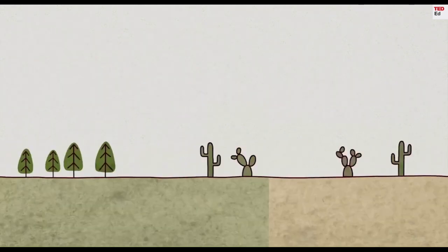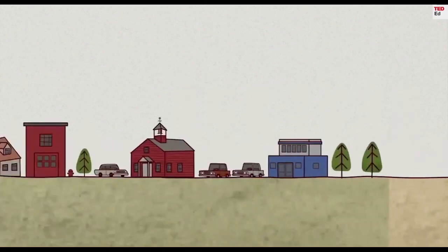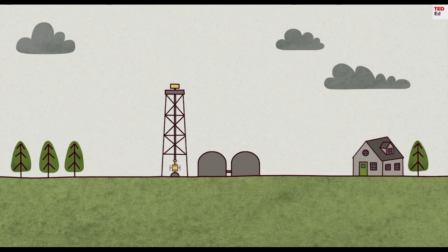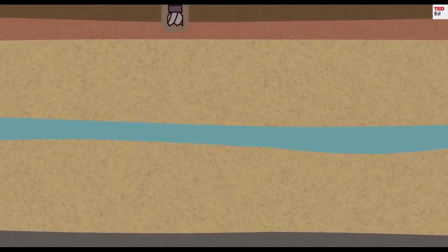A fracking site can be anywhere with natural gas, from a remote desert to several hundred feet from your backyard. It starts out with a long vertical hole, known as a wellbore, drilled down through layers of sediment.